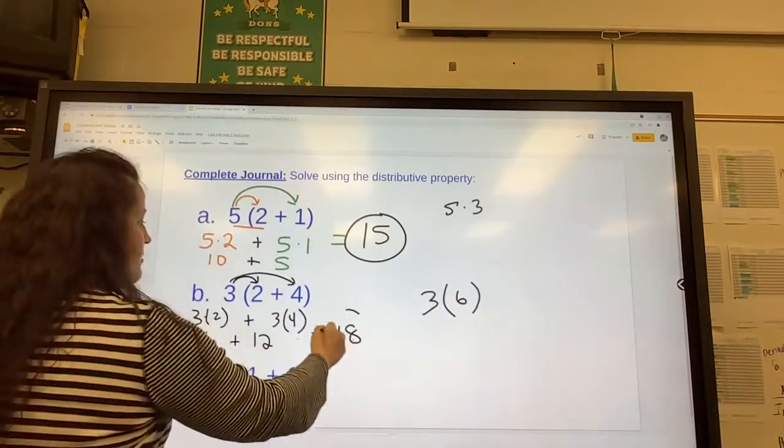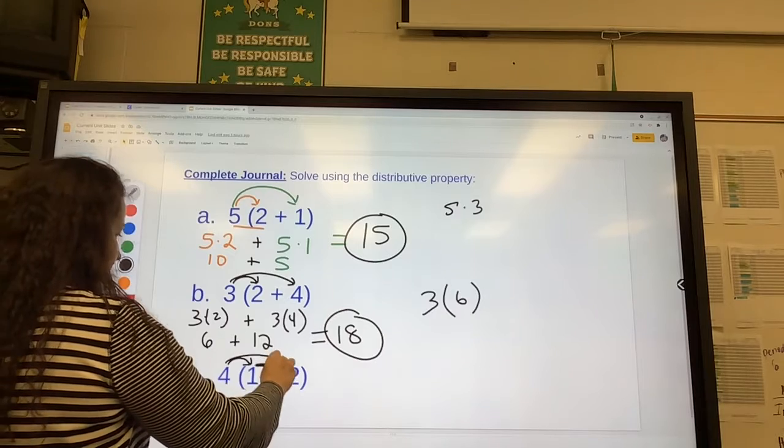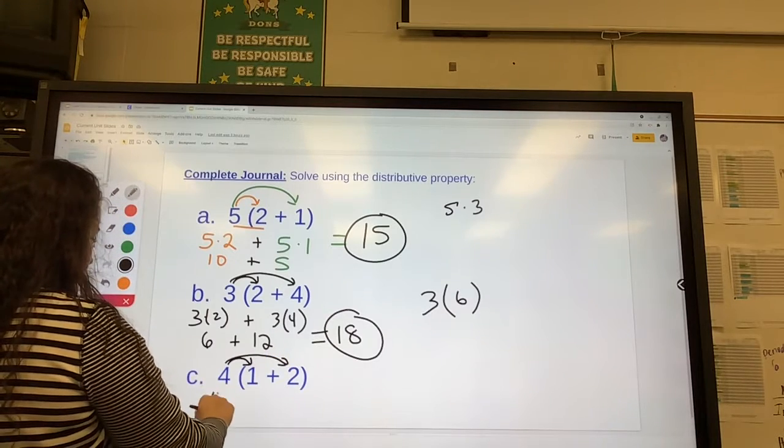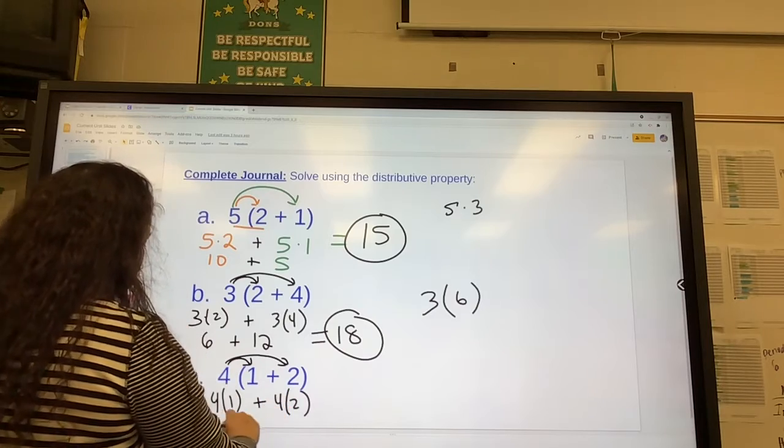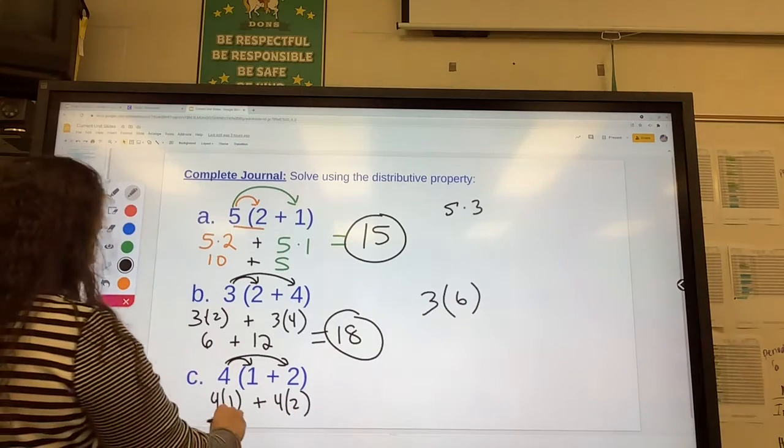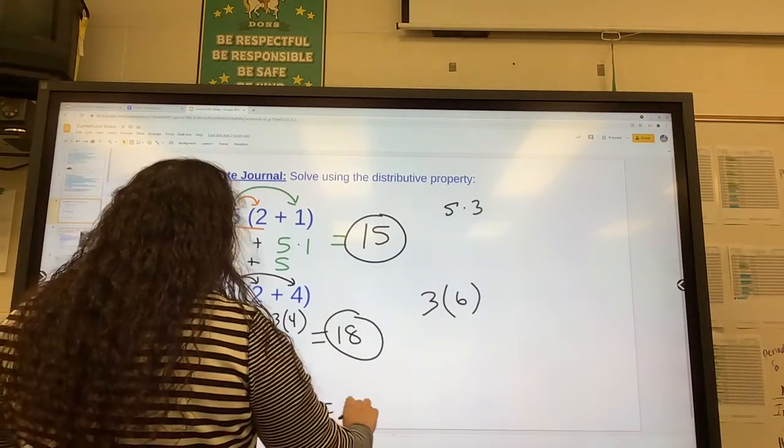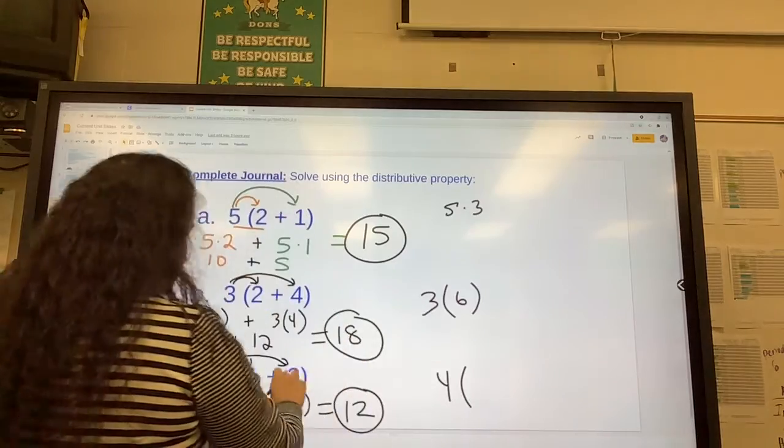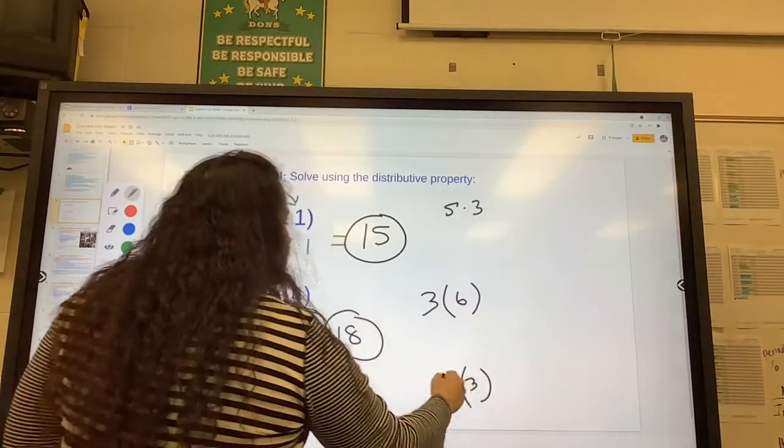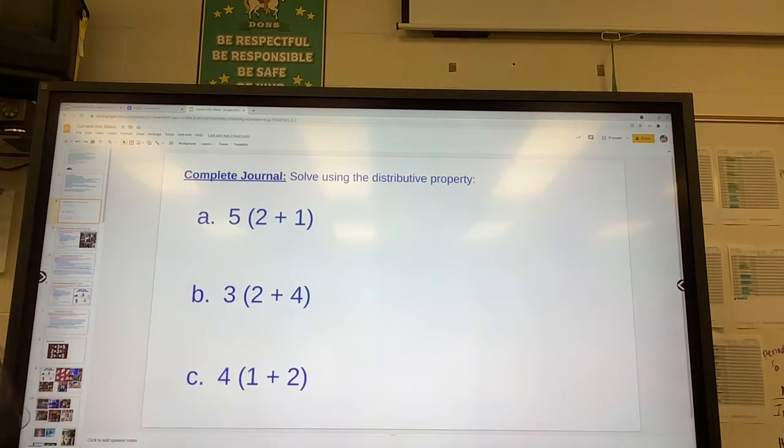Last one, 4 times 1 and 4 times 2. 4 times 1 plus 4 times 2. That's 4 plus 8, which equals 12. The shortcut is add the inside. 1 plus 2 is 3. 4 times 3 would also get 12. That's how you solve it.